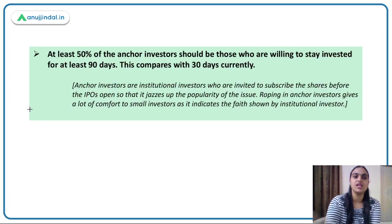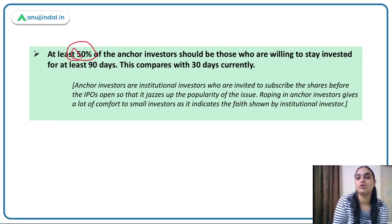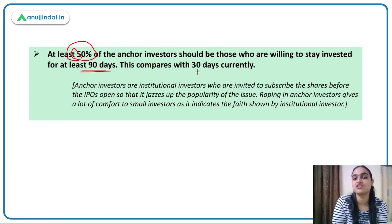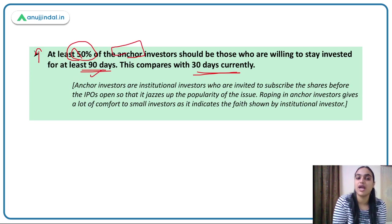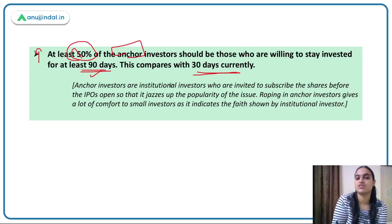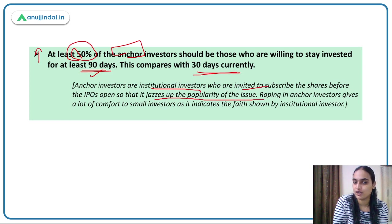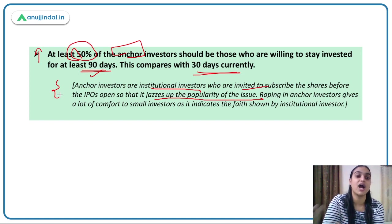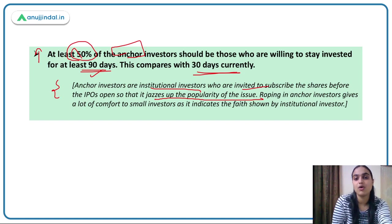The last proposal: at least 50% of anchor investors should be willing to stay invested for at least 90 days. Currently, per existing norms, they only have to remain invested for 30 days — this proposal changes it to 90 days. Anchor investors are institutional investors invited to subscribe to shares before the IPO opens to jazz up the popularity of the issue. When big banks and mutual fund companies invest, smaller investors are also interested. This gives comfort to small investors as it indicates the faith of institutional investors.